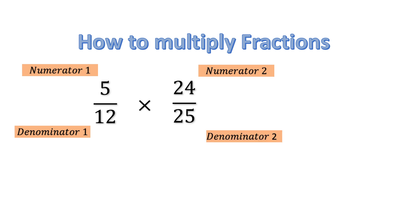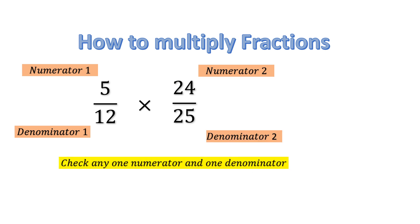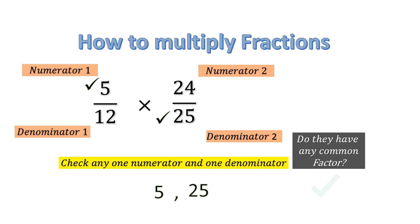Then let's check some other numbers. Let us take 5 — that is numerator 1 — and 25, which is denominator 2. We said we can check any numerator with any denominator. So 5 and 25: do they have any common factor? Yes! 5 appears in the table of both 5 and 25, so 5 is a common factor for both.